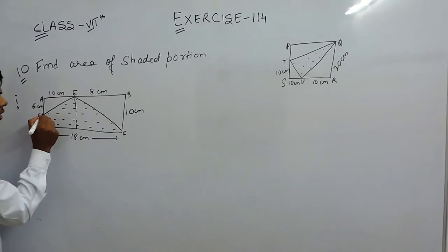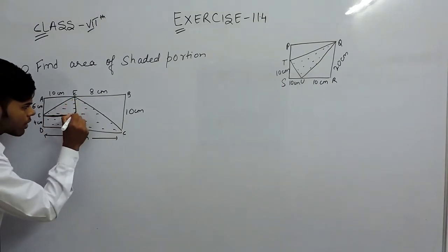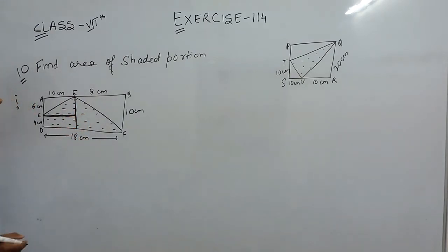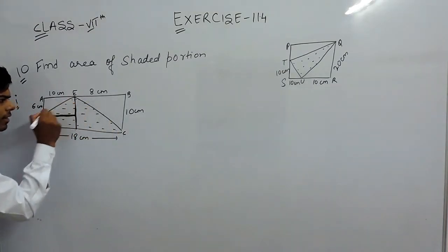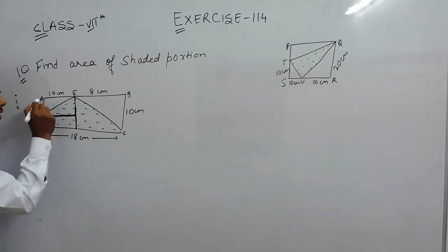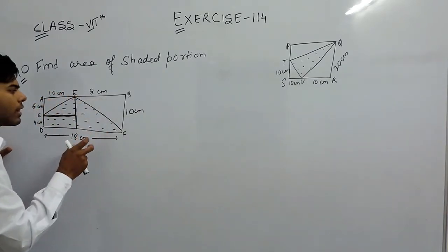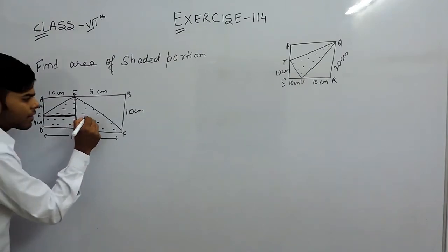And then this is the second imaginary line. So these two are the imaginary lines that we constructed in the figure. Now you can see that these figures are known to you. This is a triangle, this is a triangle, this is a rectangle, and this complete is also a rectangle. So in every time these type of questions are there, you have to do your own constructions and then number the figures.